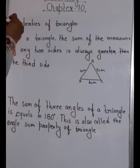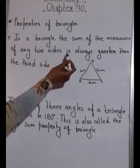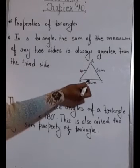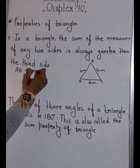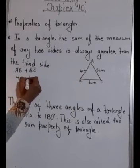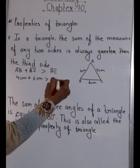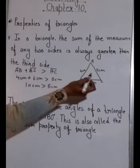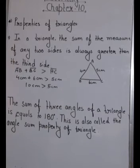Now we have the properties of a triangle. The first property states: the sum of the measure of any two sides is always greater than the third side. For example, in a triangle with sides AB = 4 cm, BC = 6 cm, and AC = 5 cm: AB + BC = 10 cm, which is greater than AC = 5 cm. Similarly, AC + BC = 11 cm, which is greater than the third side. This is a key property of triangles.